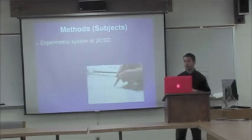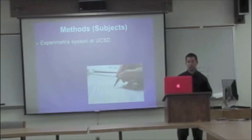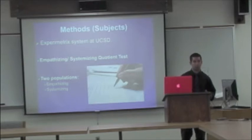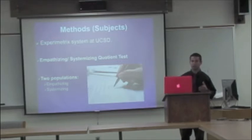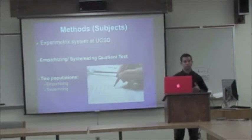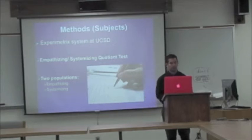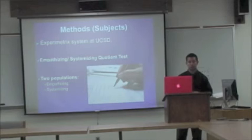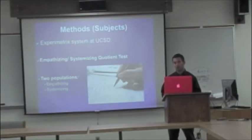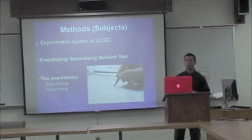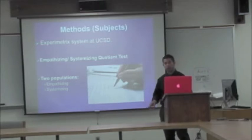My subjects were all found using the experiment system here at UCSD — all college-age students, 18 to 22, with corrected vision and no history of mental disorder. I ended up getting about 75 subjects from the initial part of my study. In order to get my populations, I ran them through something called the EQSQ test — the Empathizing-Systemizing Quotient test — which calculates for each subject an empathizing quotient and a systemizing quotient. The first population was the high-empathizing group, who fell into the top 50% in the EQ and the bottom 50% in the SQ. The other population was the systemizing group — the exact opposite: top 50% in the SQ, bottom 50% in the EQ.